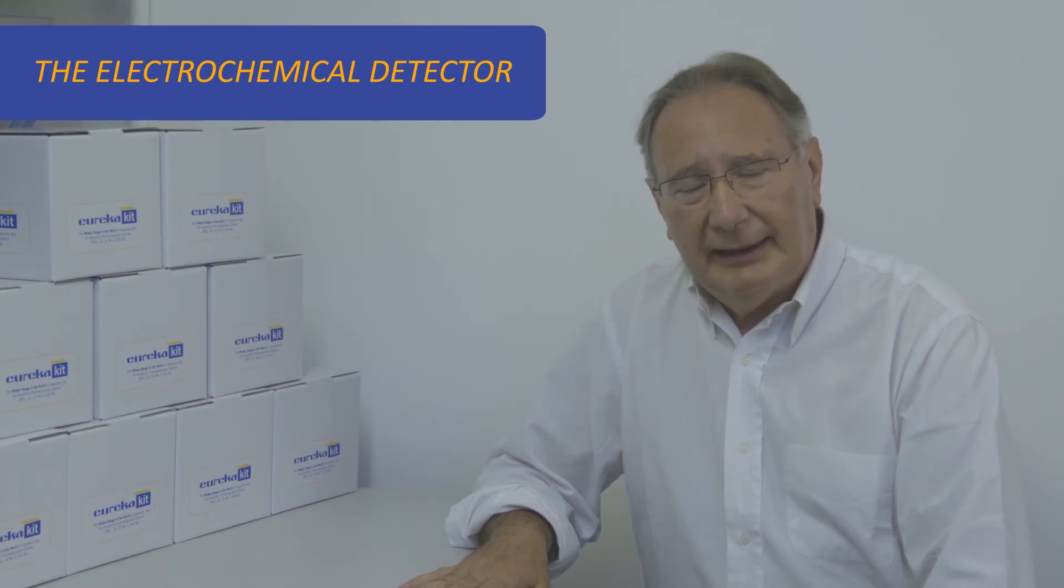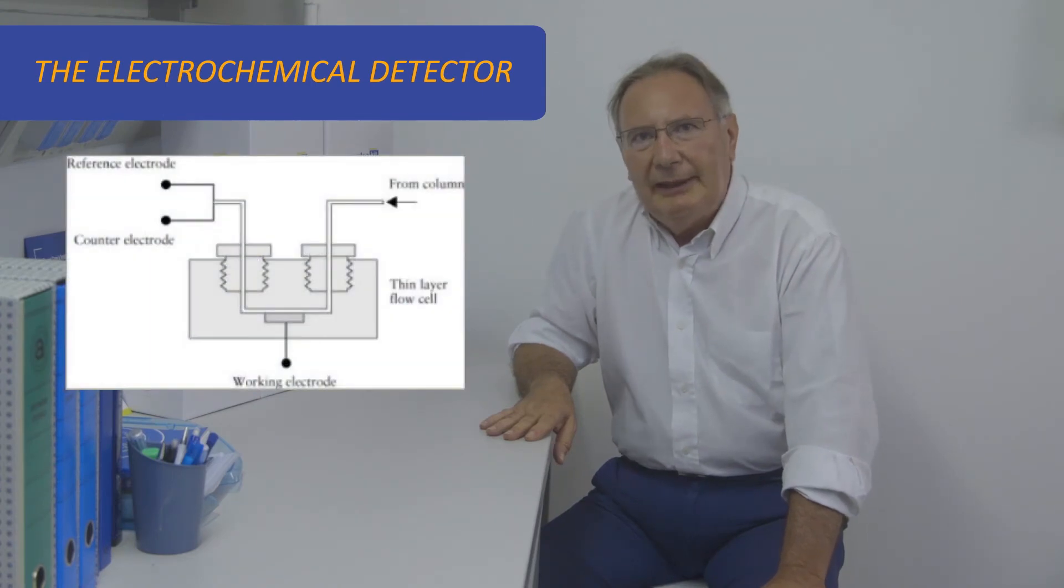The amperometric detector is the most common. It is based on the potential of a working electrode with respect to the potential of a reference electrode. When the column elutes a chemical species and there is an electrolysis process, it produces a current whose intensity is measured.